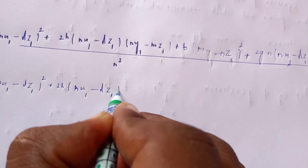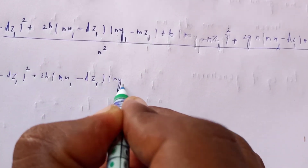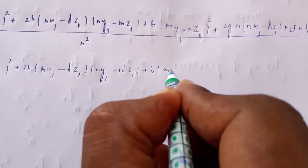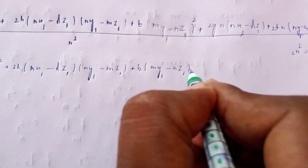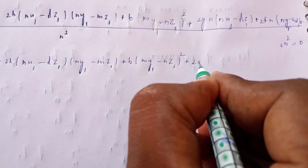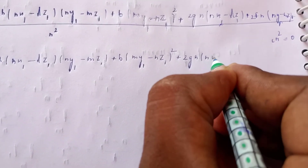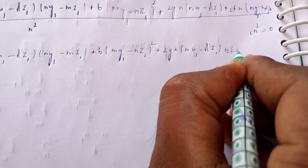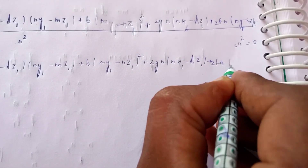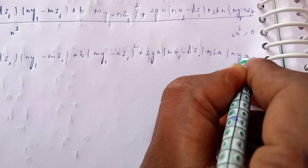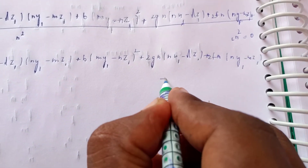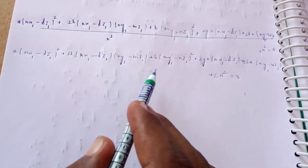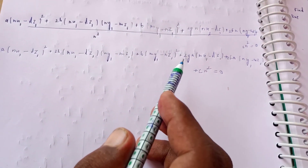The required cylinder equation is: a(nx - lz)² + 2h(nx - lz)(ny - mz) + b(ny - mz)² + 2gn(nx - lz) + 2fn(ny - mz) + cn² = 0. This is the required cylinder equation — a simple calculation with the substitution.